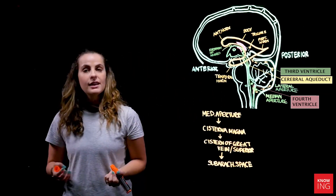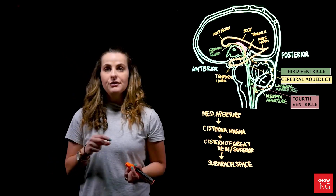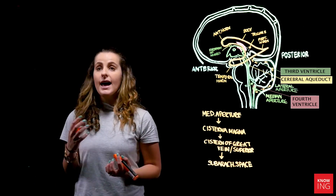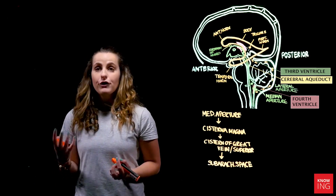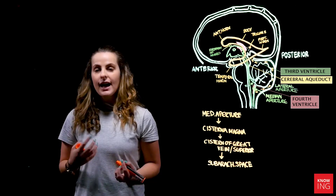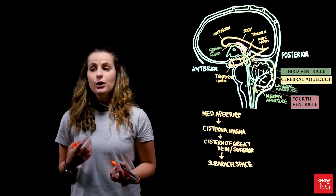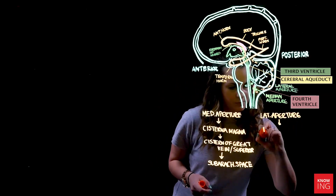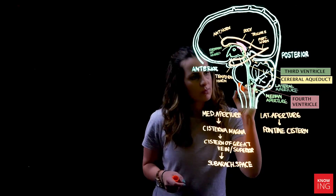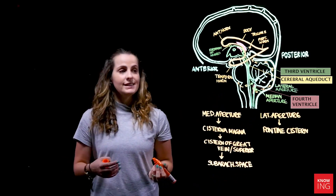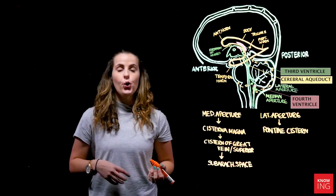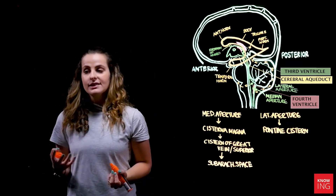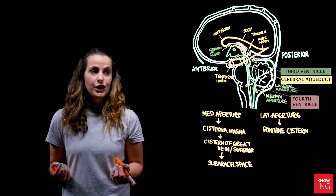From the lateral apertures, CSF flows down the spinal cord, back up and around the anterior aspects of the brainstem. The first cistern immediately anterior to the pons is the pontine cistern. From there, CSF courses superiorly until it is in front of the peduncles, where the cistern is referred to as the interpeduncular cistern.